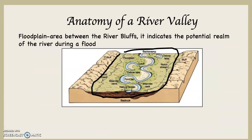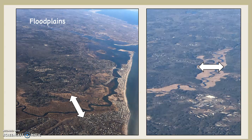The floodplain is the area between the river bluffs. It indicates the potential realm of the river during a flood — good or bad place to build a house? If you look at both of these photographs, you can see the two pointed arrows indicating the floodplains. Notice no house is built there either.